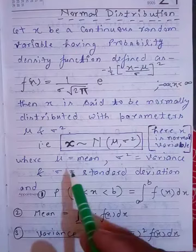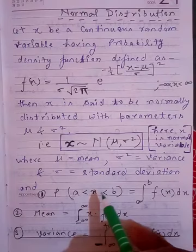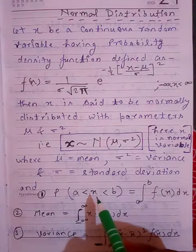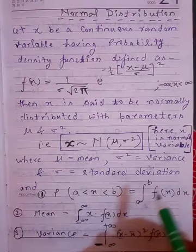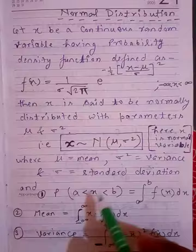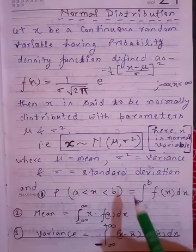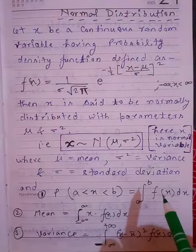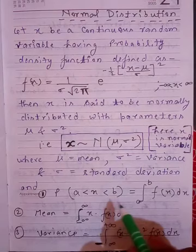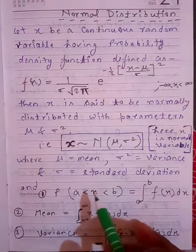Sigma square का square root लेते हैं जो sigma है, that is known as standard deviation. If we want to find the probability that normal variable x lies in some range, integrate the probability density function f(x) — find that area. Integrate f(x) within the range a to b, and the value of that definite integral is the probability that x lies between a and b.